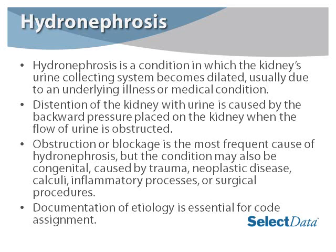For hydronephrosis — hydronephrosis is a condition in which the kidney's urine-collecting system becomes dilated, usually due to an underlying illness or medical condition. Distention of the kidney with urine is caused by the backward pressure placed on the kidney when the flow of urine is obstructed. Obstruction or blockage is the most frequent cause of hydronephrosis, but the condition may also be congenital, caused by trauma, neoplastic disease, calculi, inflammatory processes, or surgical procedures. Documentation of etiology is essential for code assignment — we need to know why the hydronephrosis occurred.